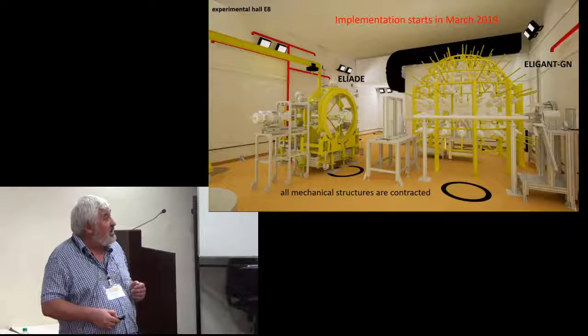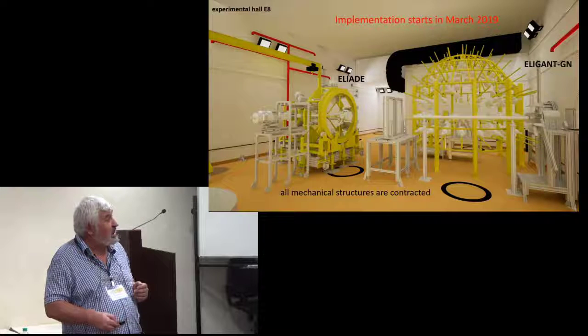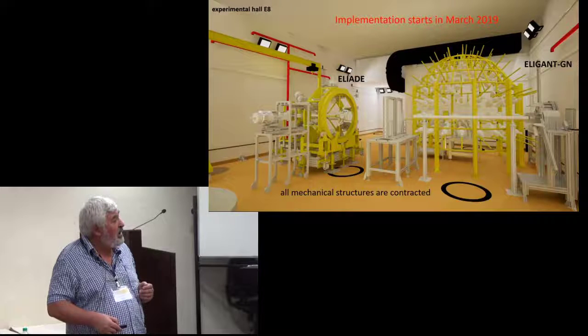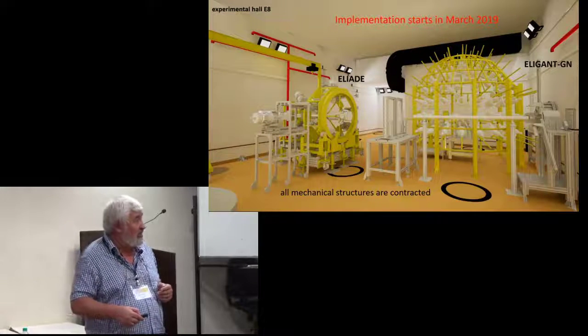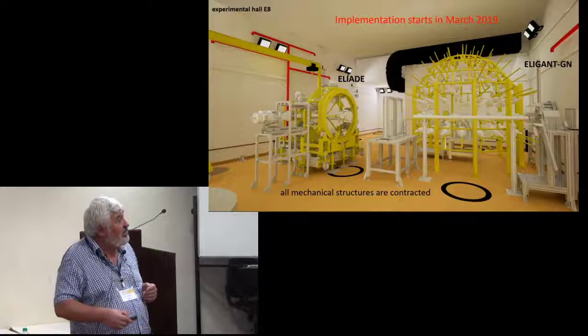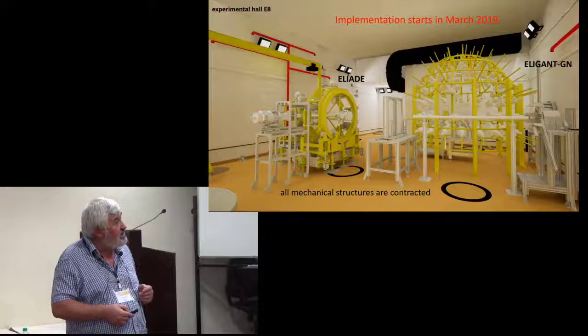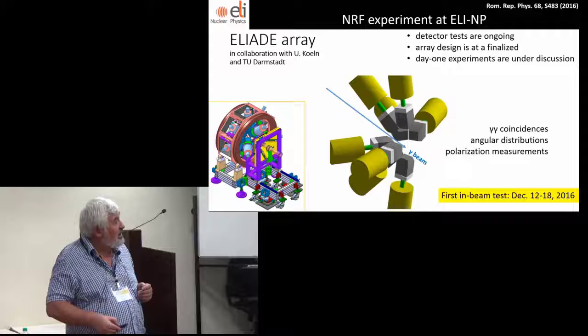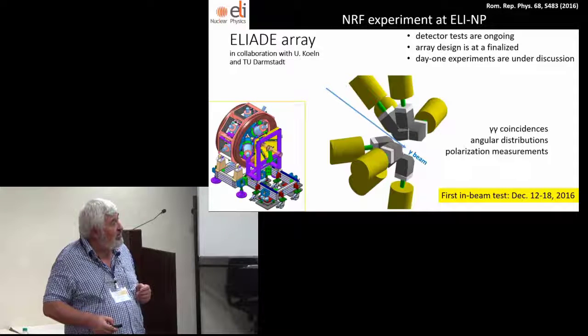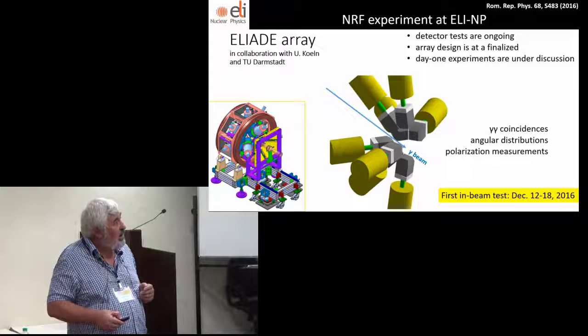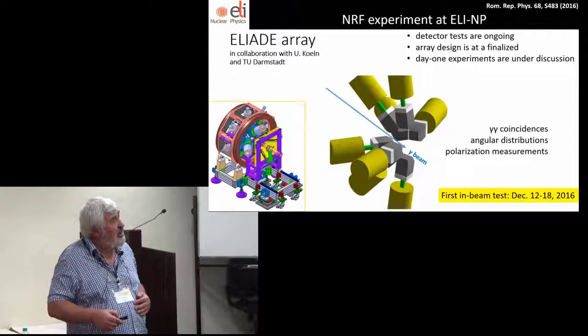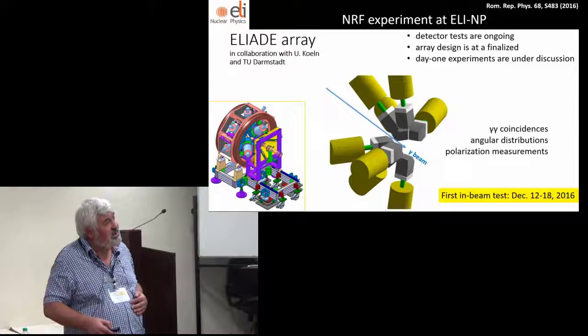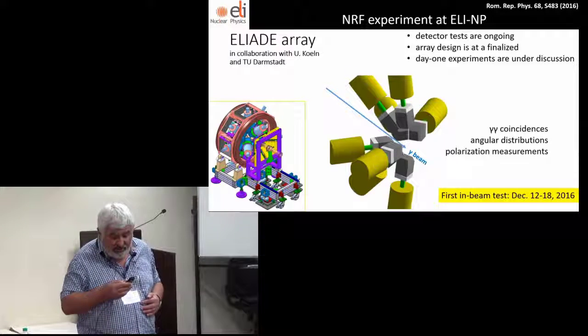The implementation: we have two huge arrays of germanium detectors and scintillators plus neutron detectors. We've contracted everything. We have the detectors, and implementation in the experimental halls will start in March this year. The first array is of large volume clover detectors of TIGRESS type. We're doing detector tests, and with this we can do gamma-gamma coincidences, angular distributions and polarization measurements.